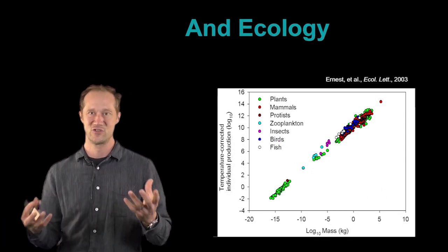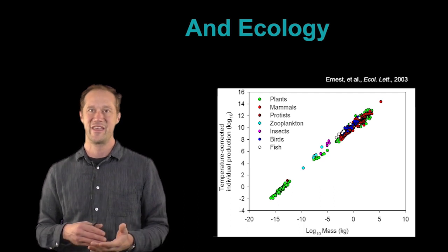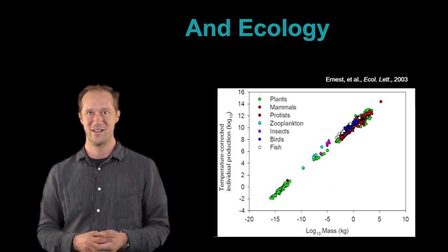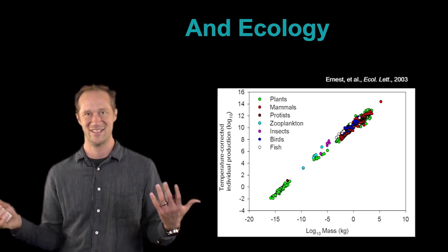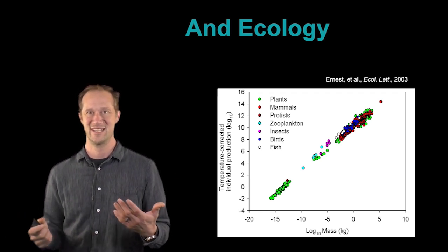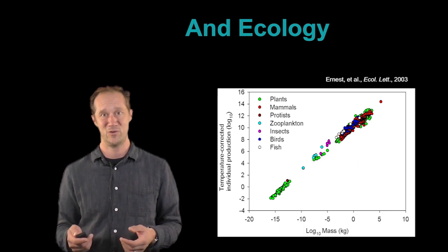Or if you want to look at ecology and we correct for temperature and look for size and think about how much each individual produces in a system, that actually follows a very tight, clean pattern here as well. And it's true across a huge, diverse variety of taxa. It includes plants, mammals, insects, fish, almost everything you can think of.